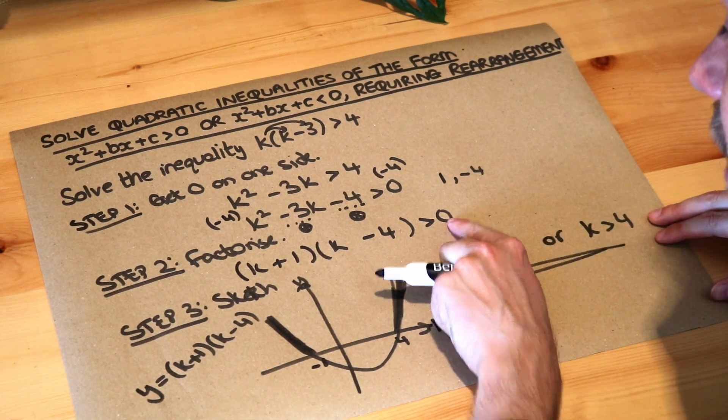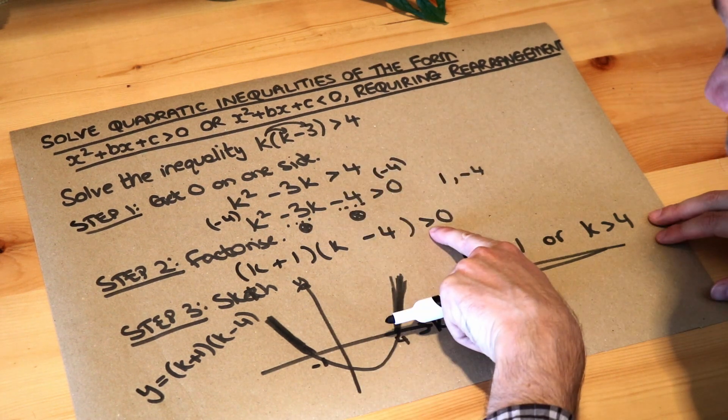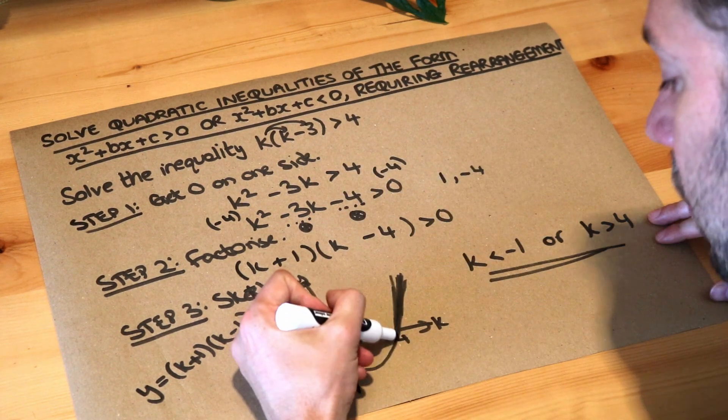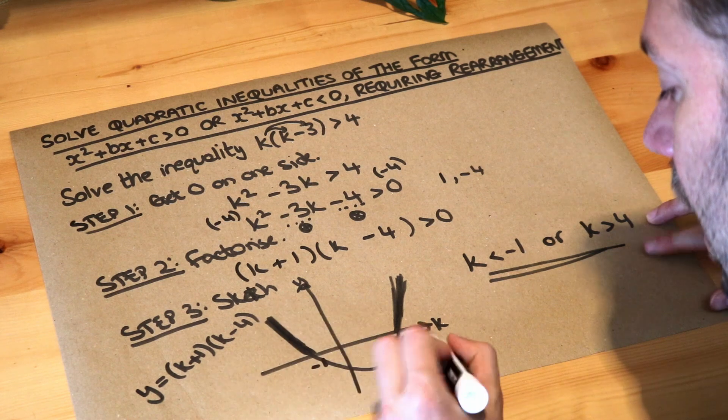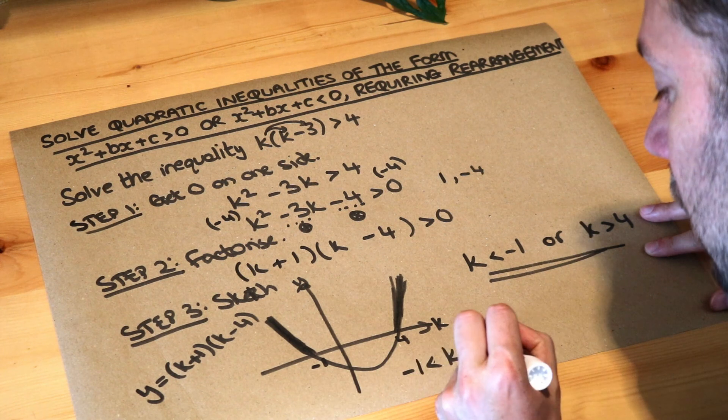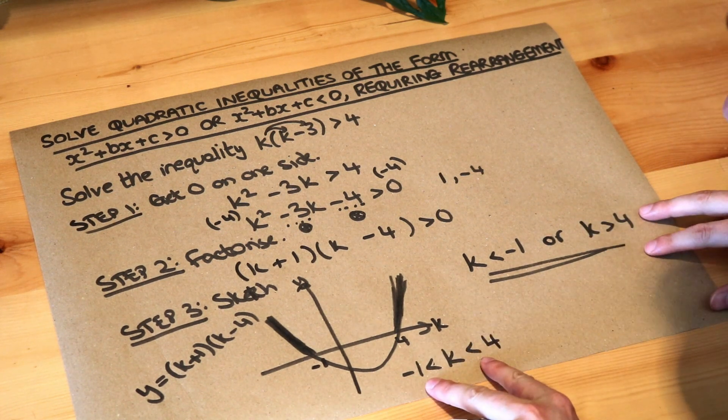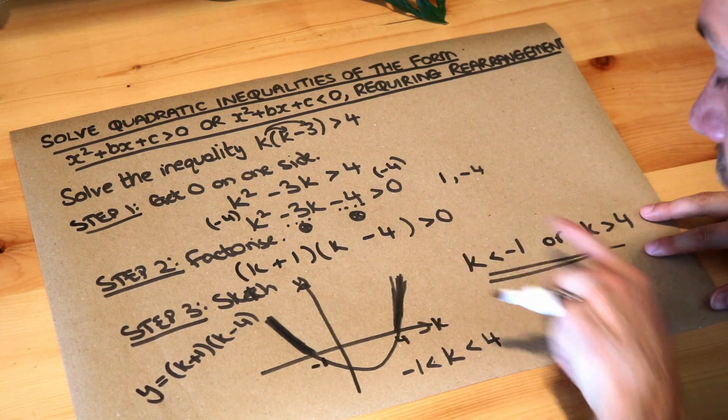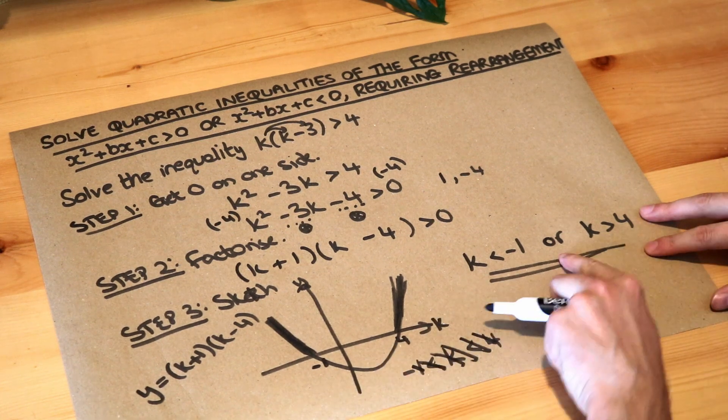If this was less than zero instead, we had less than four at the start and we ended up with less than zero here. Then it would actually be this part of the line, and the answer would be that k is between minus one and four. So that would be the answer if that was less than zero here. But it's not. It's greater than zero, so that is the correct answer.